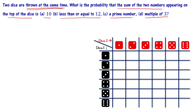Any possible combination: black color dice shows 1 and red shows 1, giving outcome (1,1). The sum of those two numbers is what we are interested in. Similarly, we can get outcomes like (1,2), (1,3), (1,4), (1,5), (1,6) — six possible outcomes when the black dice shows 1.